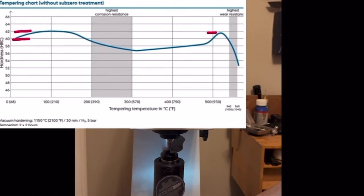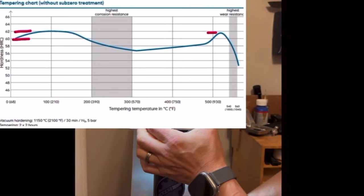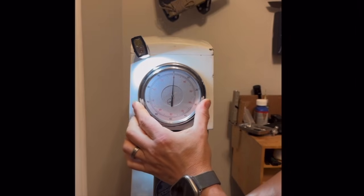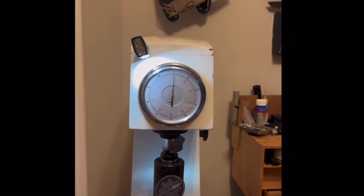The grayed-out area represents the maximum corrosion resistance, and the hump on the right represents maximum edge retention. There's no way for me to know which path they chose or which region.